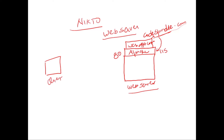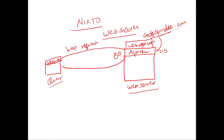The client — it can be your own laptop — types the URL, say codespindle.com, and an HTTP request is generated. The page is given back as an HTTP response. So there's an HTTP request and an HTTP response happening. To keep this entire communication safe, we follow HTTPS — that is, the HTTP Secure protocol.